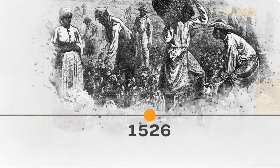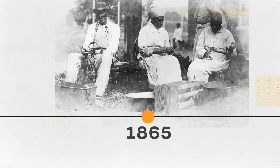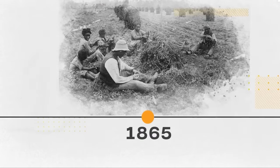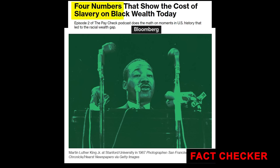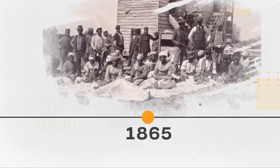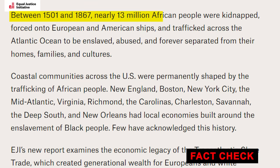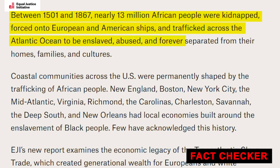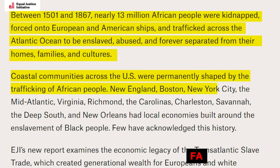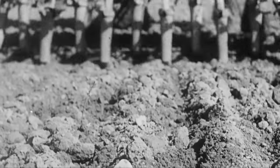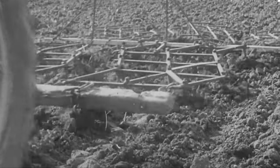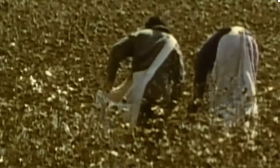Slavery in the United States was a dehumanizing institution that treated Africans and African Americans as tradable commodities. Over 600,000 enslaved individuals were forcibly brought to the U.S., constituting 5% of the 12 million Africans captured during the transatlantic slave trade that began in 1526. During the early colonial era, Britain's colonies, including the future 13 U.S. colonies, actively practiced slavery. Africans were forcefully taken and subjected to harsh labor on American soil, contributing to the cultivation of crops such as tobacco and cotton.